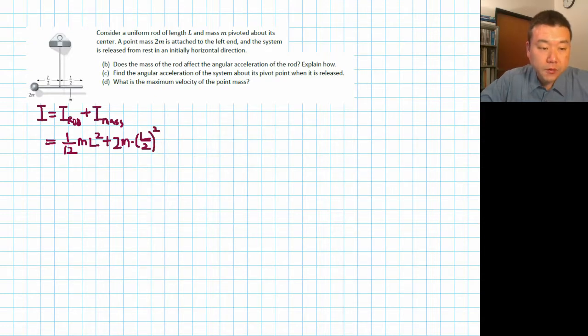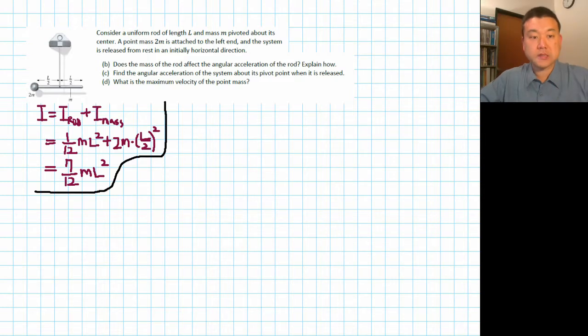If you go through the algebra, it's 1/12 plus 2 times 1/4, so 1/2, or 6/12. So the whole thing is 7/12 mL squared. I'm just going to save it on the side here and bring this up if I need it in the future. Let's go through the question.